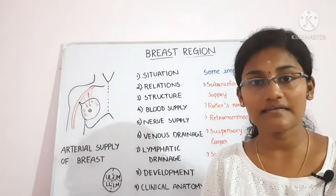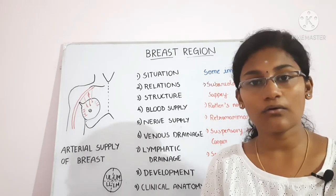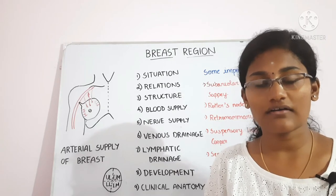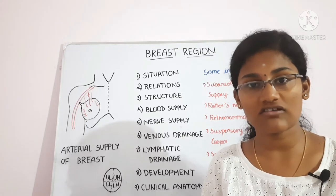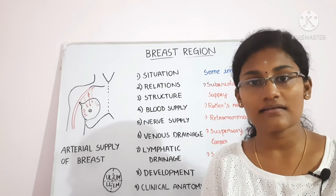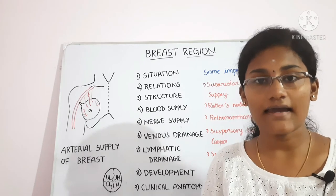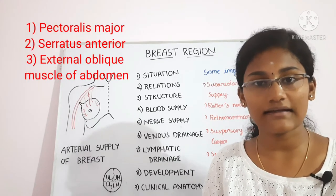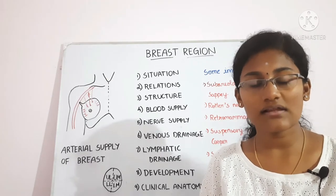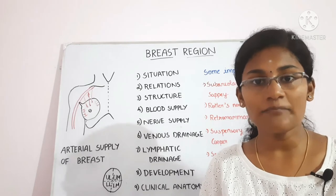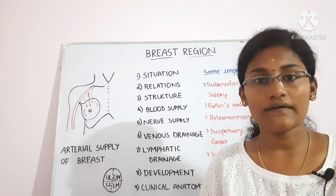Now let's talk about the deep relations of the breast. The breast lies in the superficial fascia of the pectoral region. Deep to the breast lies the pectoral fascia, and deeper still lie three muscles: pectoralis major, serratus anterior, and the external oblique muscle of the abdomen.